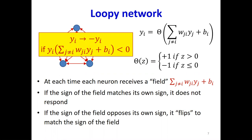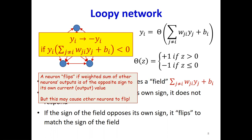To summarize: if the current output is y and the field is given by the affine combination, if both of them have the same sign, their product is going to be positive — the neuron doesn't flip. If they have opposite signs, their product is going to be negative and y is going to become minus y. So a neuron flips if the product of y and the field is negative.